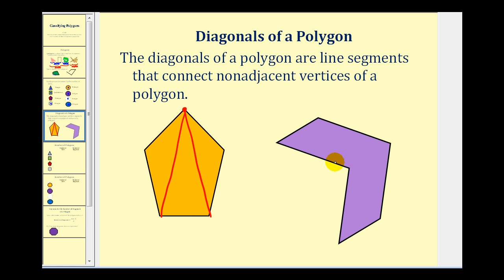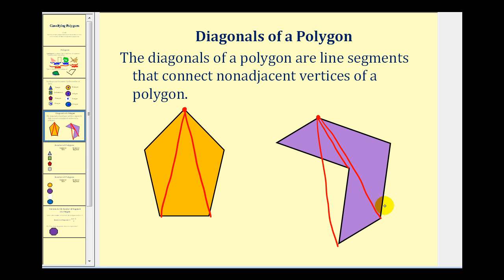Let's sketch the diagonals from one vertex of this concave hexagon. Selecting this vertex, we would have a diagonal here, here, and here. Notice that for a hexagon there are three diagonals from each vertex.